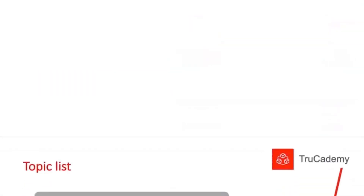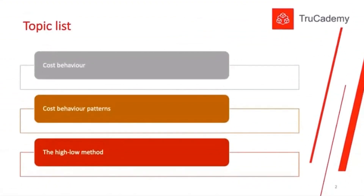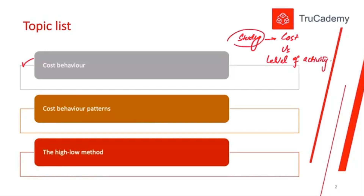Cost behavior is basically a study between cost and the level of activity. It is the study where we try to identify how cost will behave — cost can remain constant, cost can increase, or cost can decrease. When the level of activity changes, some costs will increase, some will remain constant, and some will decrease.